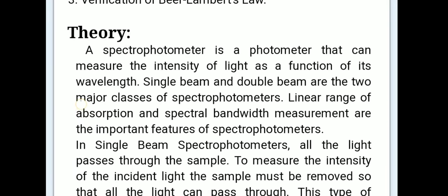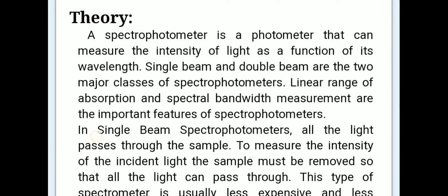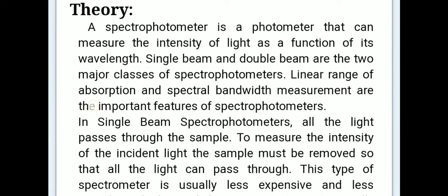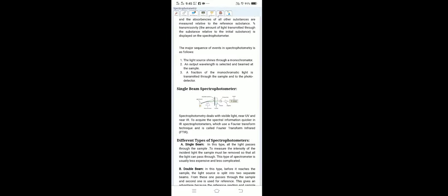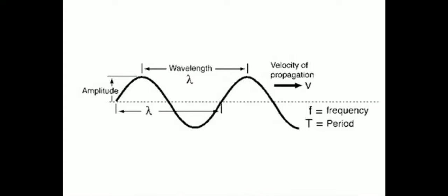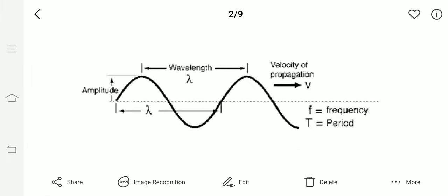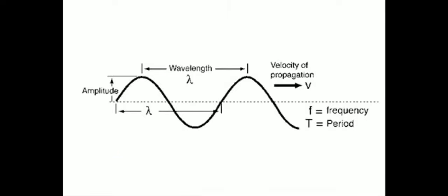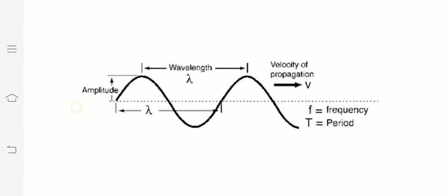The theory: a spectrophotometer is a photometer that can measure the intensity of light as a function of its wavelength. Now, in this figure we can see electromagnetic waves, and lambda represents the wavelength. The symbol of wavelength is lambda, and small f is equal to frequency. We can see that the distance from one top to another, or one bottom to another, is the wavelength.